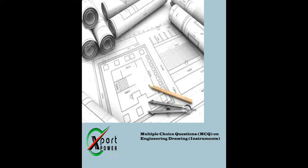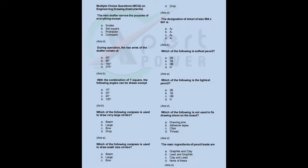Multiple-choice questions on engineering drawing instruments. The mini-drafter serves the purpose of everything except: a) scales, b) set square, c) protractor, d) compass. Answer: D.